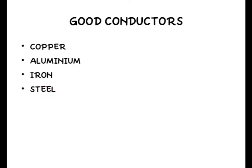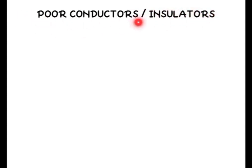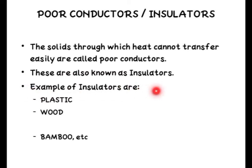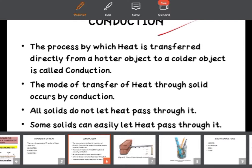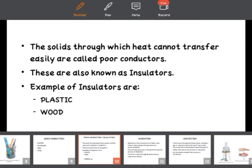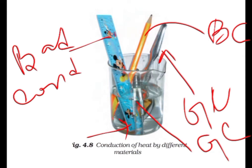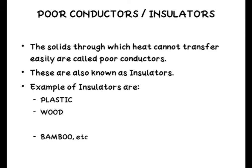There are some substances which are not good conductors — these are known as poor conductors or insulators. The solids through which heat cannot transfer easily are called poor conductors or insulators of heat. Examples of insulators are plastic, wood, and bamboo. That is why, in the earlier picture, heat could not transfer through the plastic scale or the wooden pencil — because these are bad conductors, or insulators, of heat.